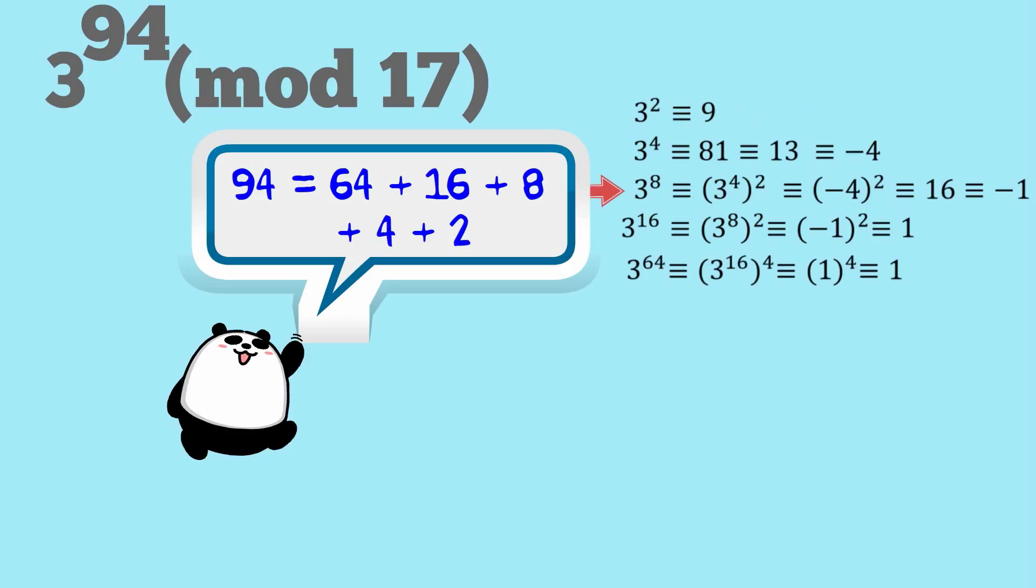Now we work out 3 to the 8. Well, 3 to the 8 is just 3 to the 4 all squared. So that's negative 4 squared, which is 16, which is equal to negative 1 or equivalent to negative 1.